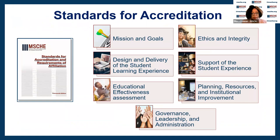The second area I want to talk about are the standards for accreditation. There are seven standards for accreditation. They encompass all of the activities that the entire institution is involved with. Although there are points of overlap, each standard addresses a specific area of institutional life. The overlaps include assessment, governance, mission, and strategic planning.